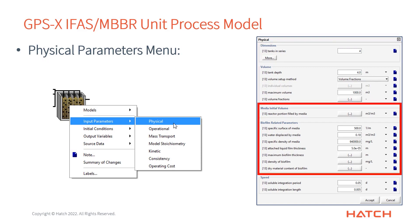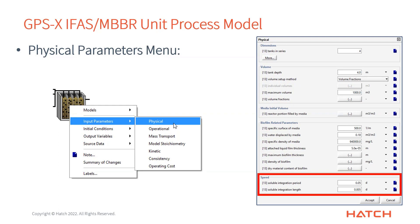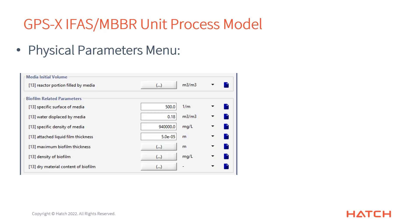The next two sections describe the media itself — how much we have and its characteristics. There's also a parameter at the bottom that I get a lot of questions about, but you don't actually need to change it. It's something we do in the background to enable the models to solve smoothly and run quickly — it just indicates some details about the integration of soluble components.